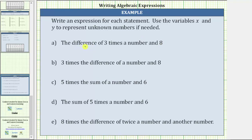The word difference means subtract, and three times a number would be three times x, or three x. Therefore, the expression for the difference of three times a number and eight is three x minus eight.